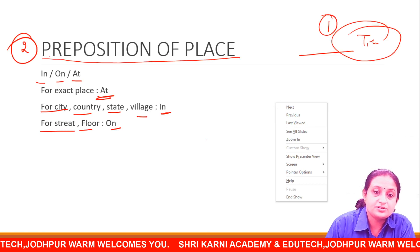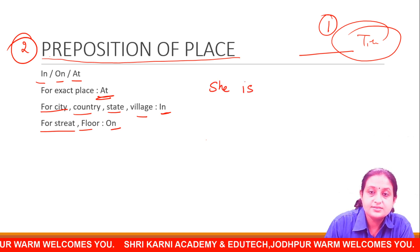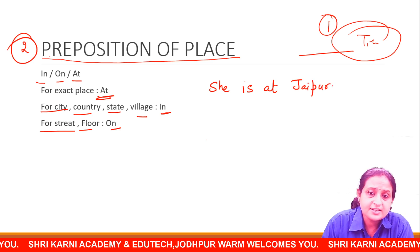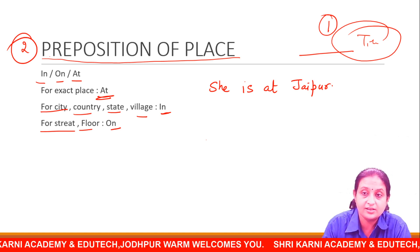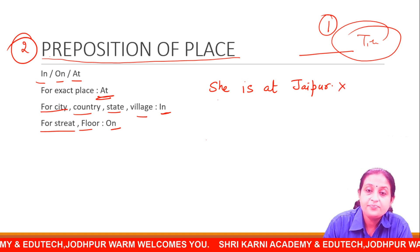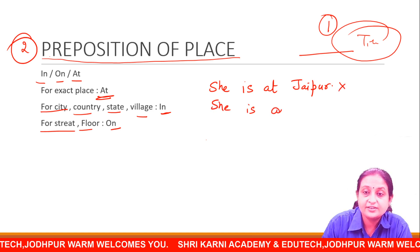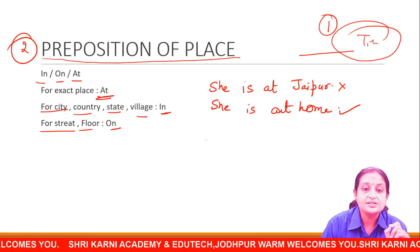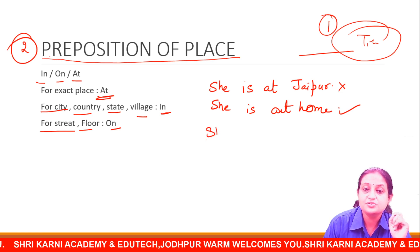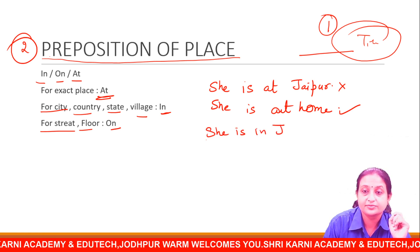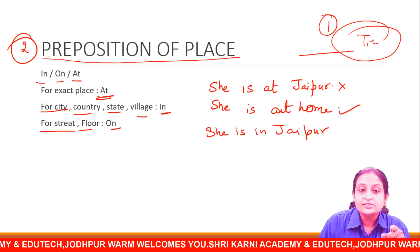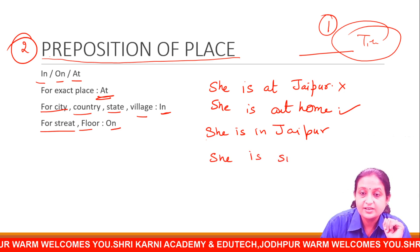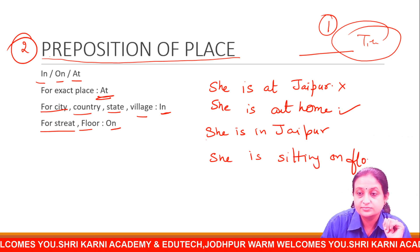For exact place — 'She is at Jaipur' — यह सही है क्या? Exact place है, Jaipur इतनी बड़ी जगह है, कहीं पर भी हो सकती है, तो यह गलत है. तो इसका क्या होगा: 'She is at home' — that is the right sentence. For city — 'She is in Jaipur' — clear हो गया. For on: किसके लिए use होगा? For street and floor. 'She is sitting on floor' — clear.